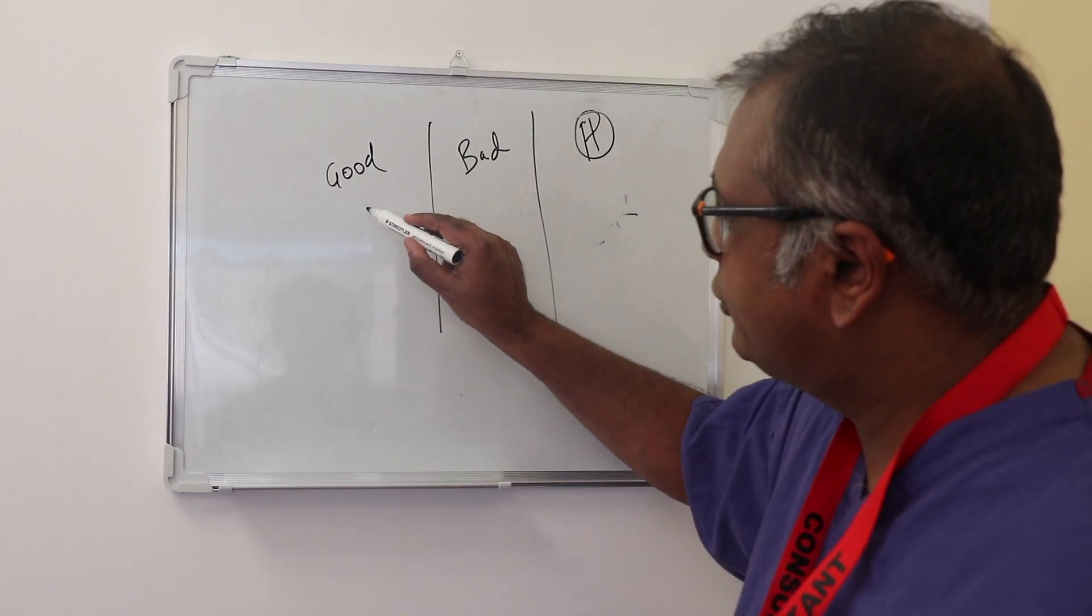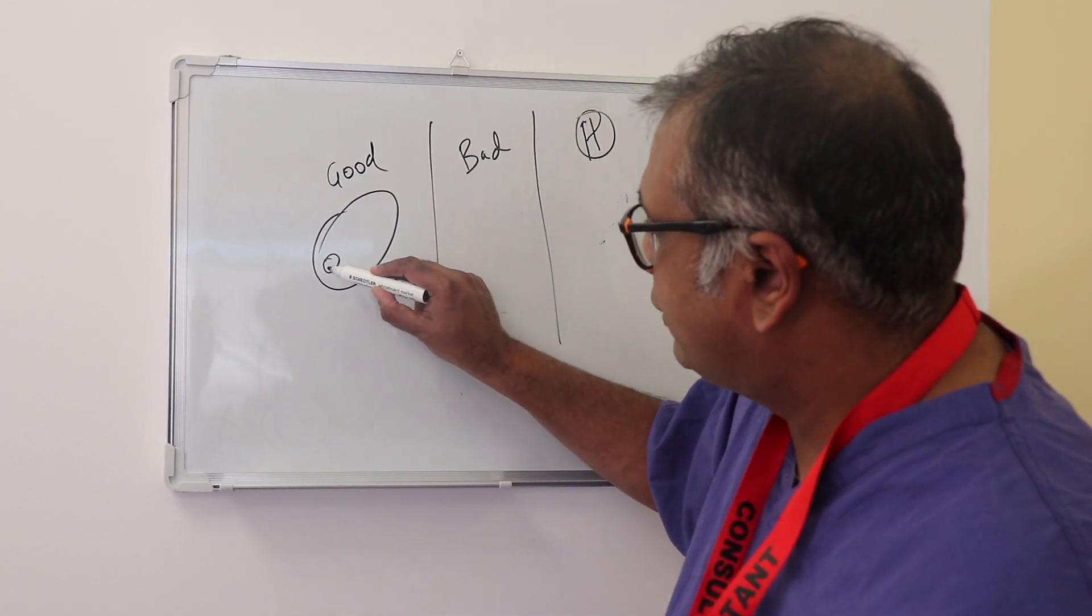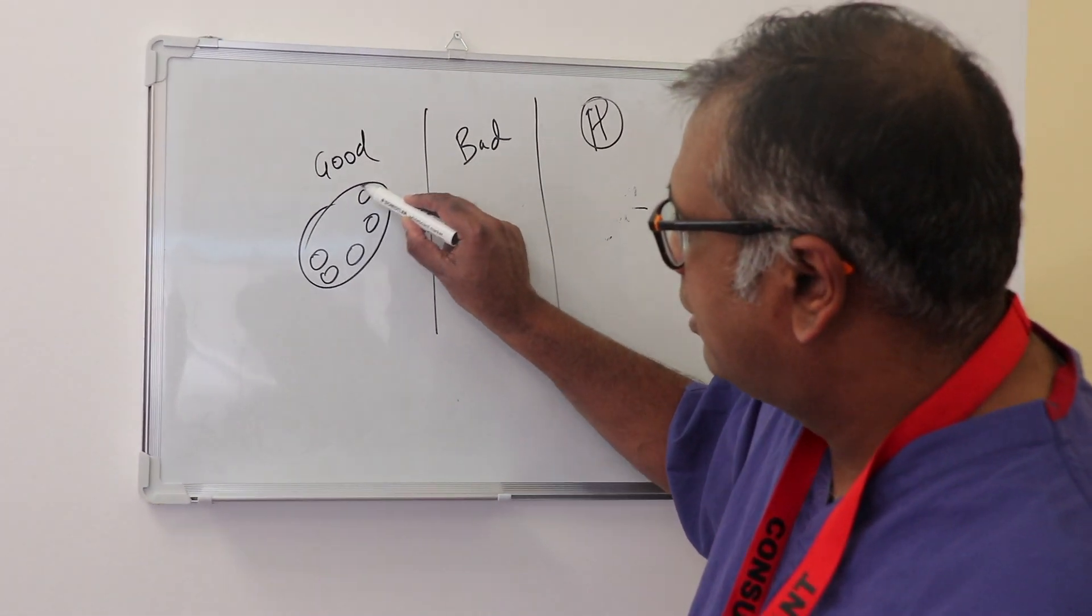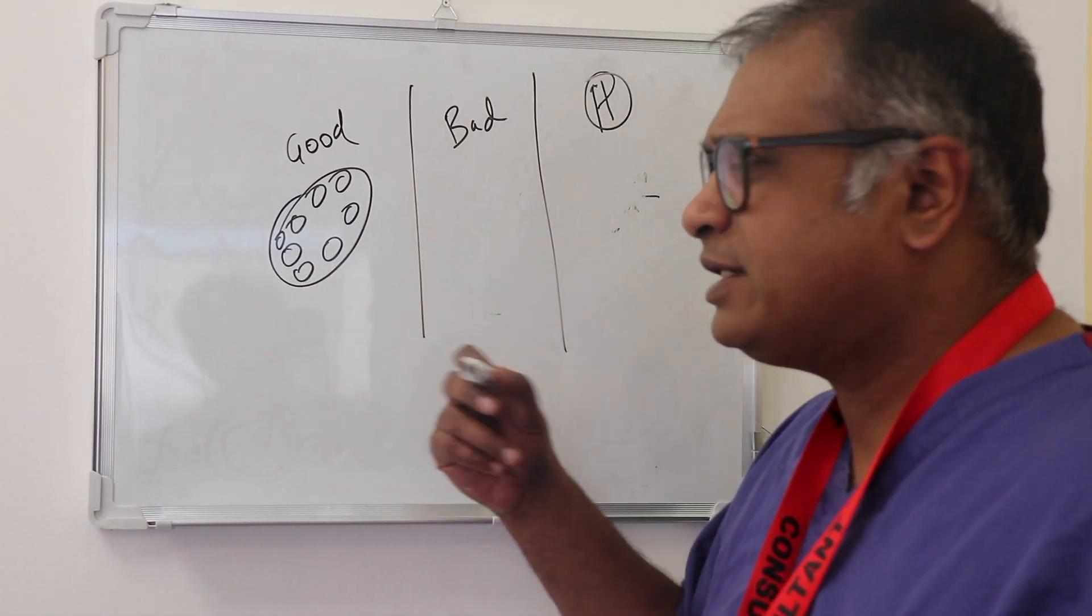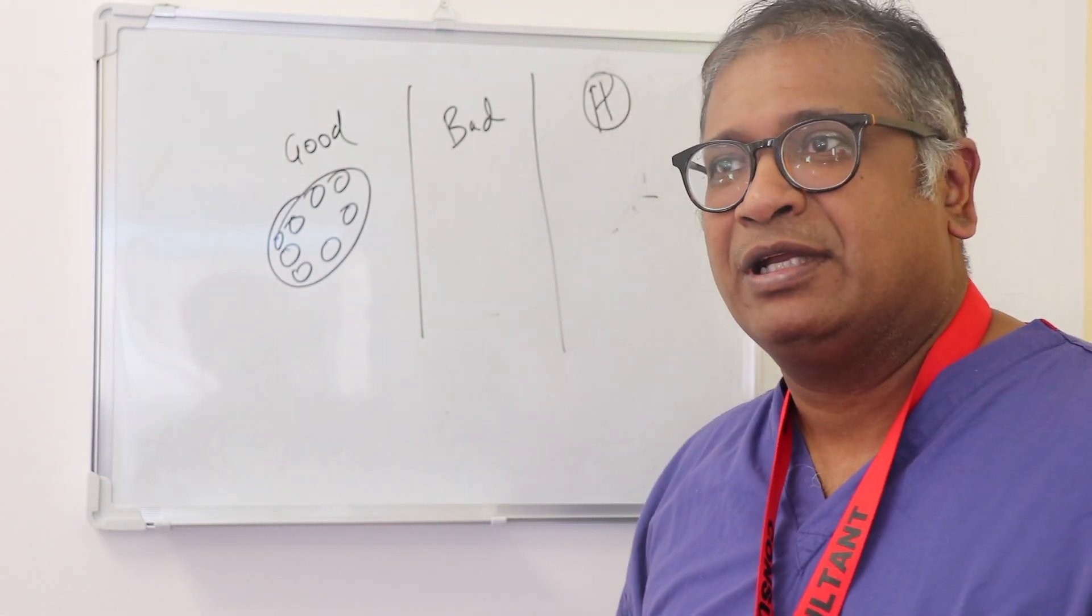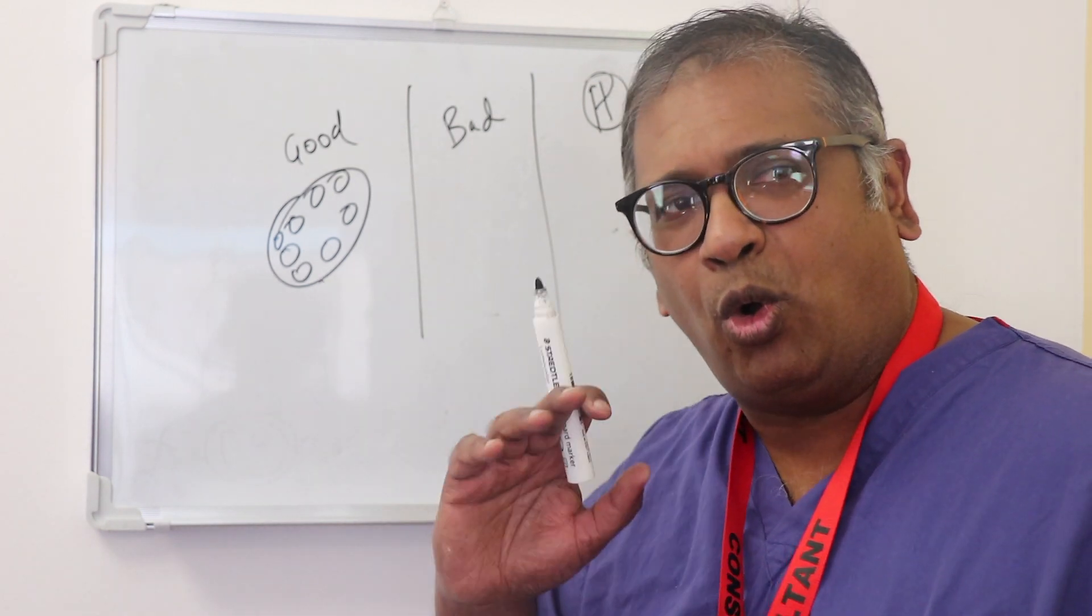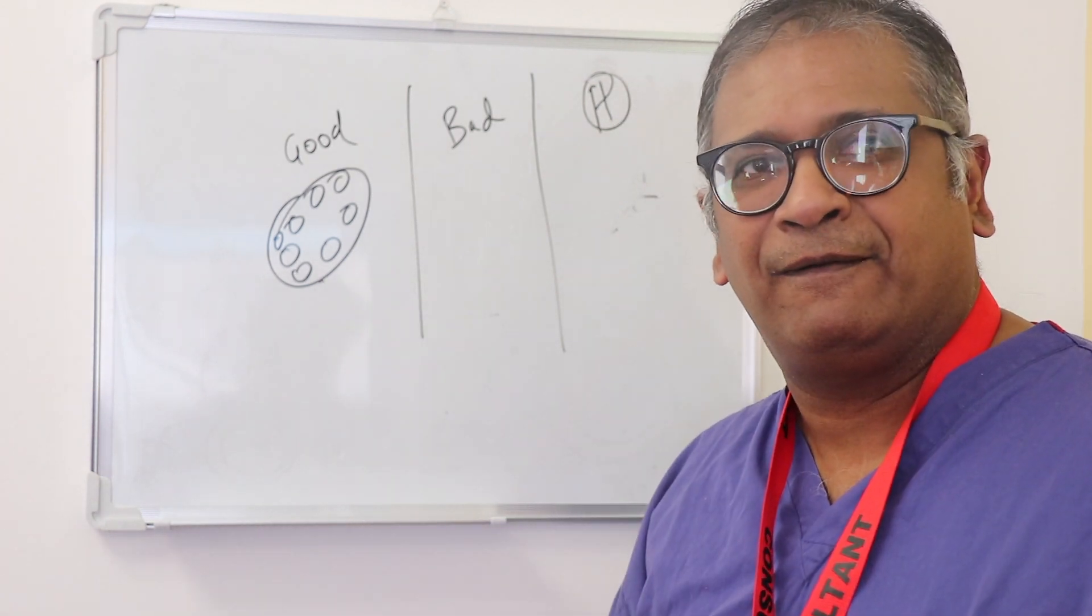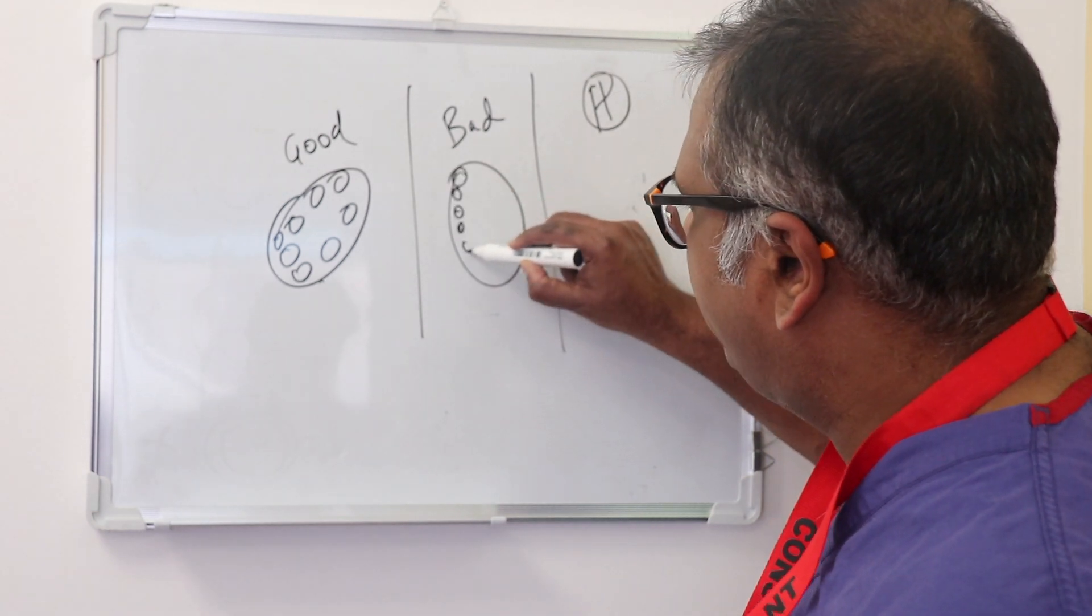What happens with good PCOS is you see ovaries that have larger antral follicles. These ovaries can stimulate very well. They don't have skyrocketing AMH, the LH is 8, 9, 10. These ovaries will always stimulate very well.